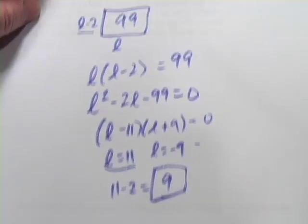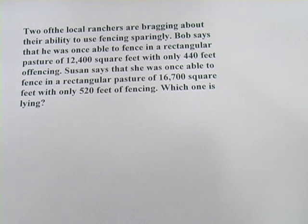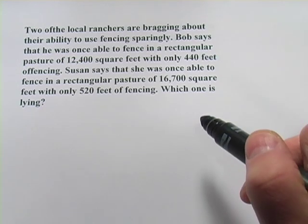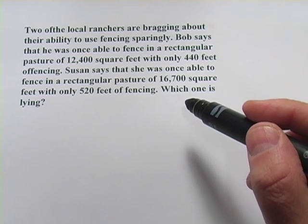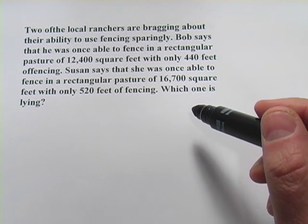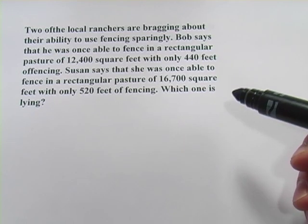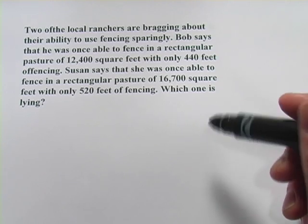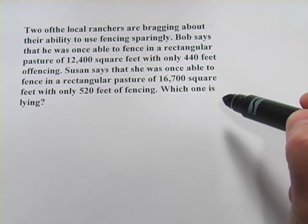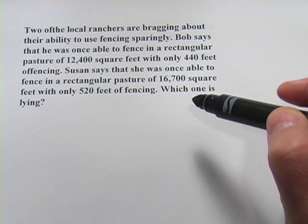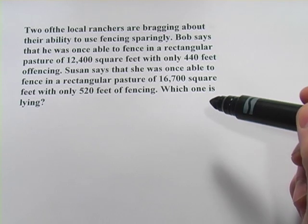All right. One more of these tricky ones. So this problem says two of the local ranchers are bragging about their ability to use fencing sparingly. Bob says that he was once able to fence in a rectangular pasture of 12,400 square feet with only 440 feet of fencing. So you can imagine that would be useful to use as little fence as possible and get as much area as you can. Fencing is expensive. Susan says she was able to fence in a rectangular pasture of 16,700 square feet with only 520 feet of fencing. Which one is lying? Apparently one of them is lying.